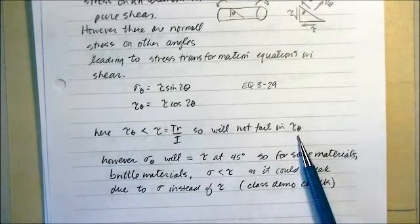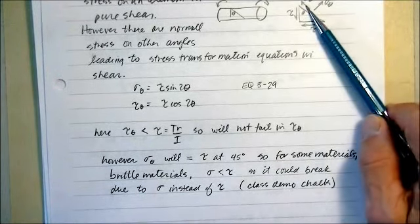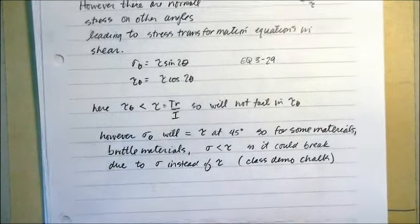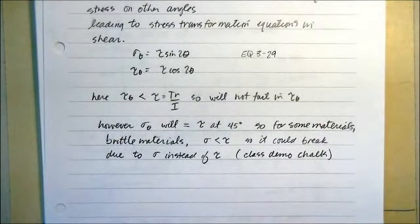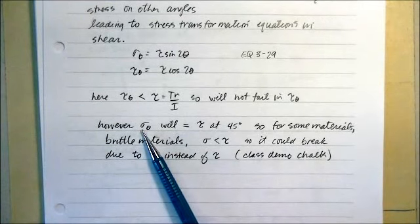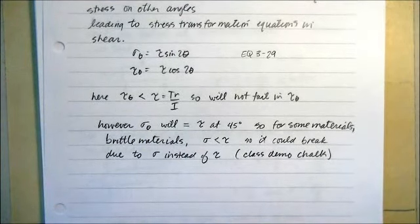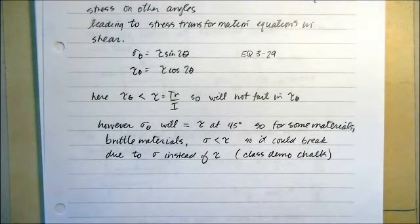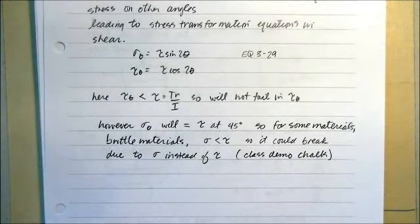In general, the shear stress on any angle is always going to be less than the shear due to TR over I — the twist — so it generally will not fail in shear on that angle. However, it could fail at the sigma angle. For brittle materials especially, sigma at some angle could be less than tau, and the material could break due to sigma instead of tau. We demonstrated this with the chalk demo, where it broke at a 45-degree angle.